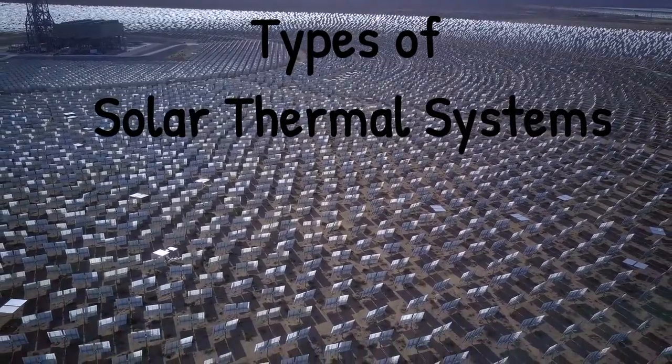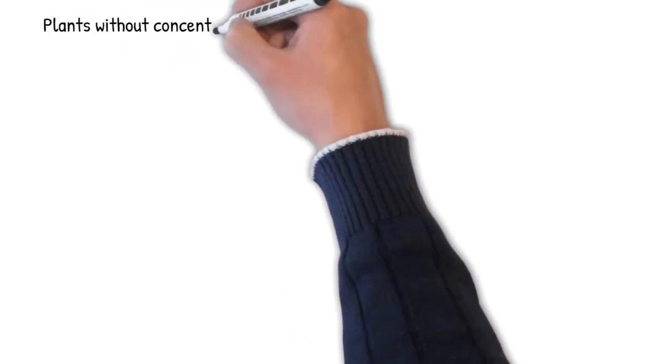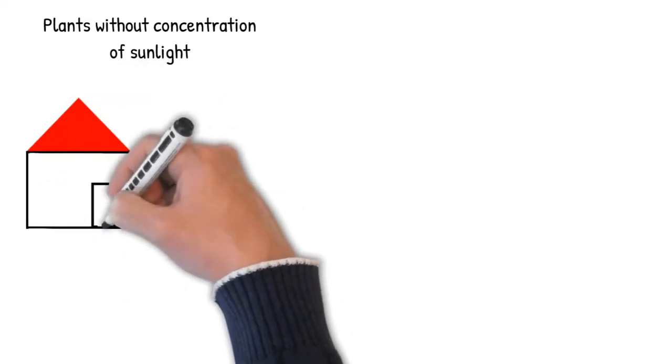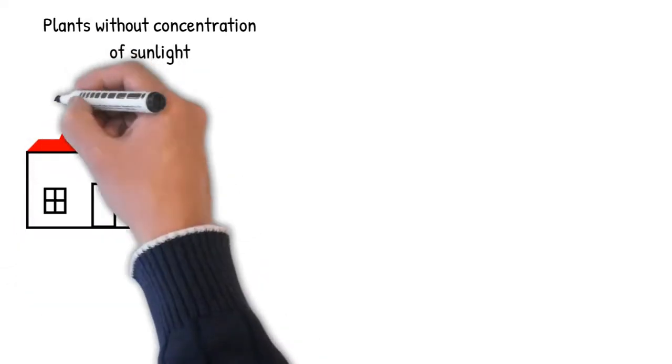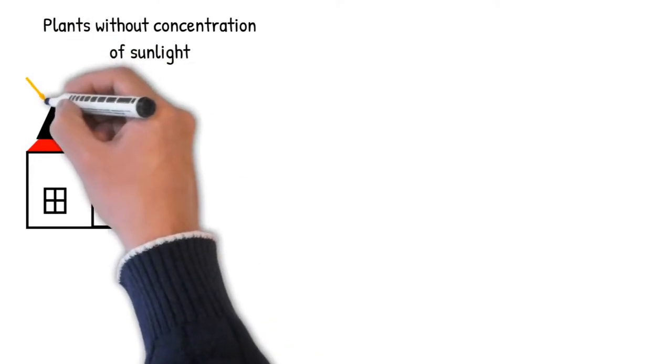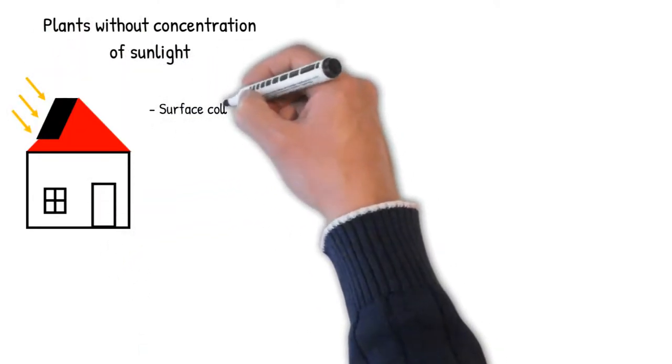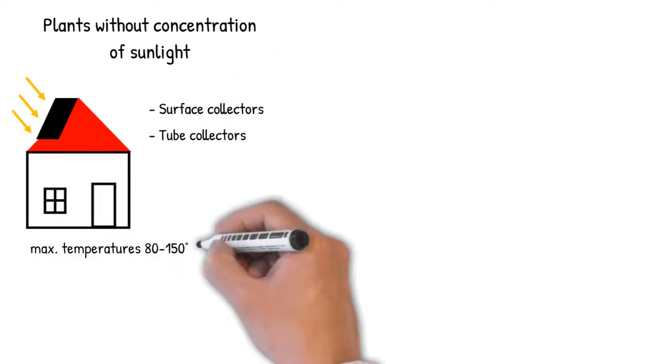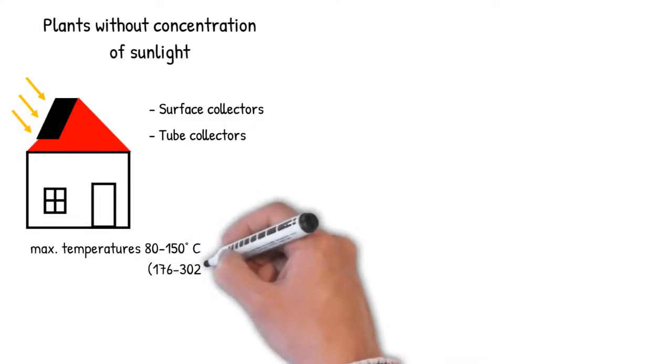Solar thermal systems can be divided into two system types based on the collectors. The first type is systems without concentration of sunlight. These systems are used for households, for example. The sunlight shines directly on the collector, as just described. Here, for example, surface collectors and vacuum tube collectors are used, in which temperatures of 80 to 150 degrees Celsius can be reached.